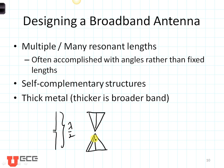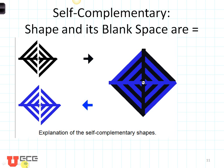Then we'll be talking about self-complementary structures and the fact that thick metal antennas are broader band than thin. For example, a cylindrical dipole will have a broader bandwidth than a thin dipole. Self-complementary structures are when the shape and its blank space are equal. Consider this antenna here, where the black antenna and the blue antenna can be interwoven so that the antenna and its blank space are equal — meaning this antenna could be self-complementary.